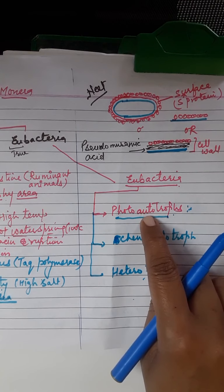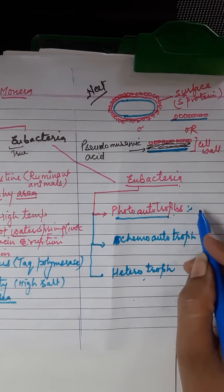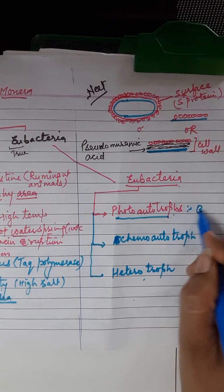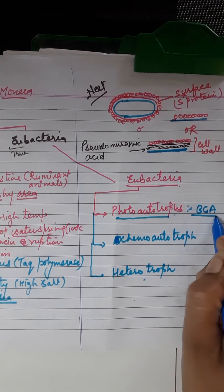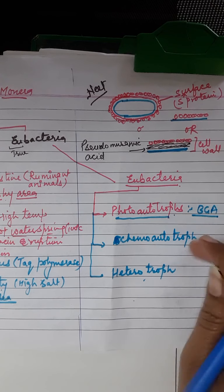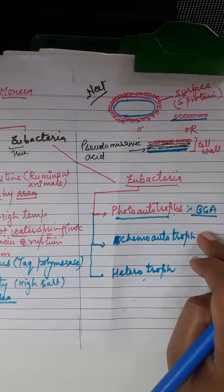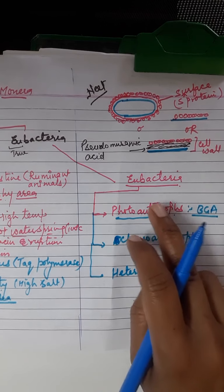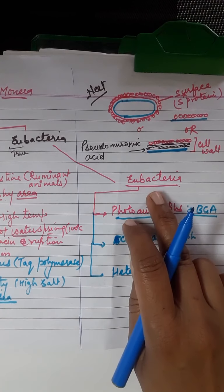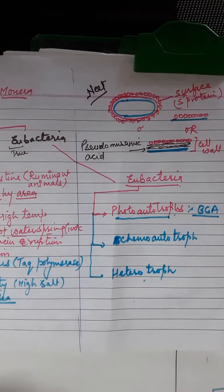Photo autotrophs perform photosynthesis — including BGA, blue-green algae, which is cyanobacteria. Previously cyanobacteria was kept in the kingdom Algae, but now it is placed in Eubacteria.